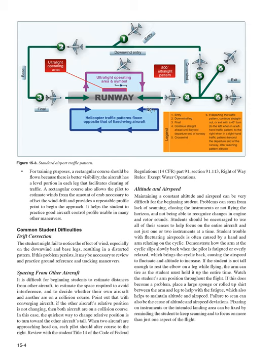If this does become a problem, place a large sponge or rolled-up shirt between the arm and leg to help with fatigue, which also helps maintain altitude and airspeed. Failure to scan can also be the cause of altitude and airspeed deviations. Fixating on instruments or the intended landing area can be fixed by reminding the student to keep scanning and to focus on more than just one aspect of the flight.